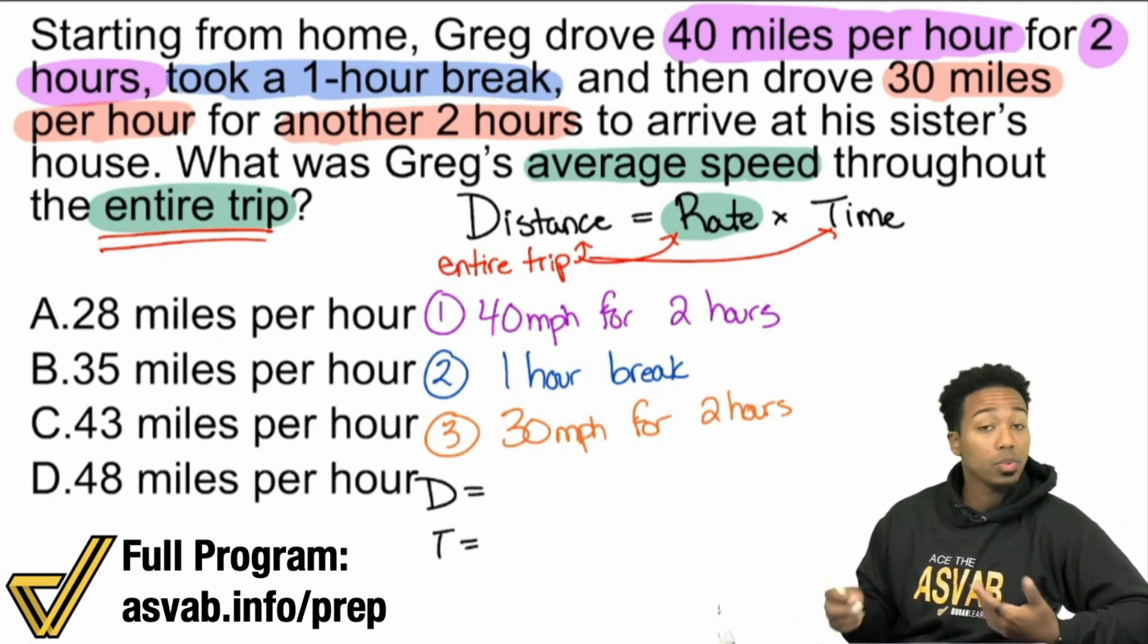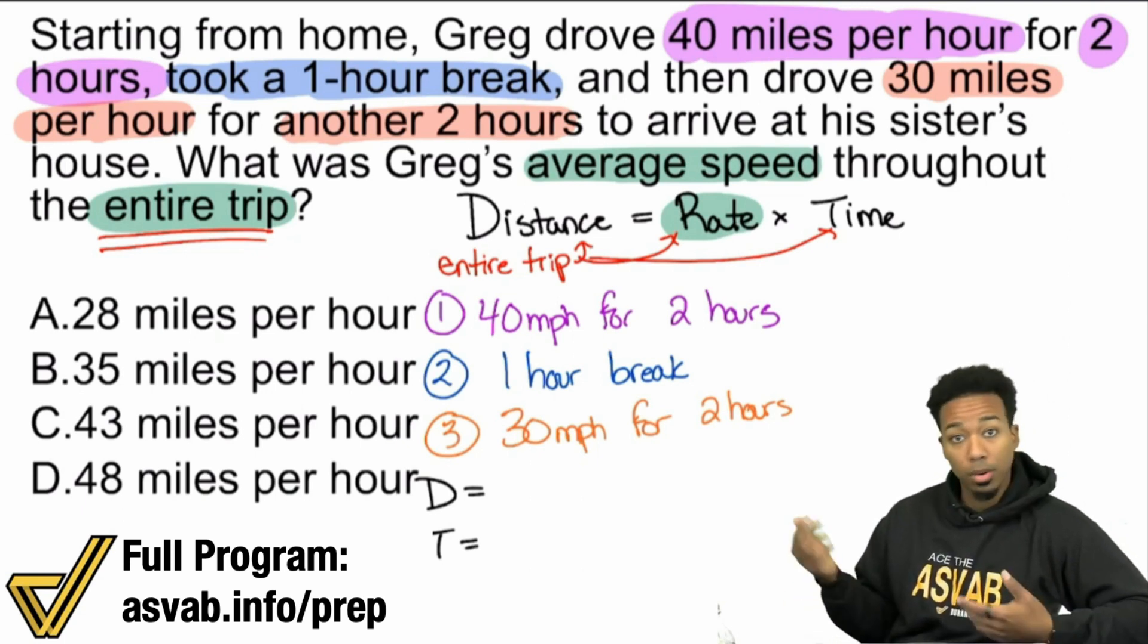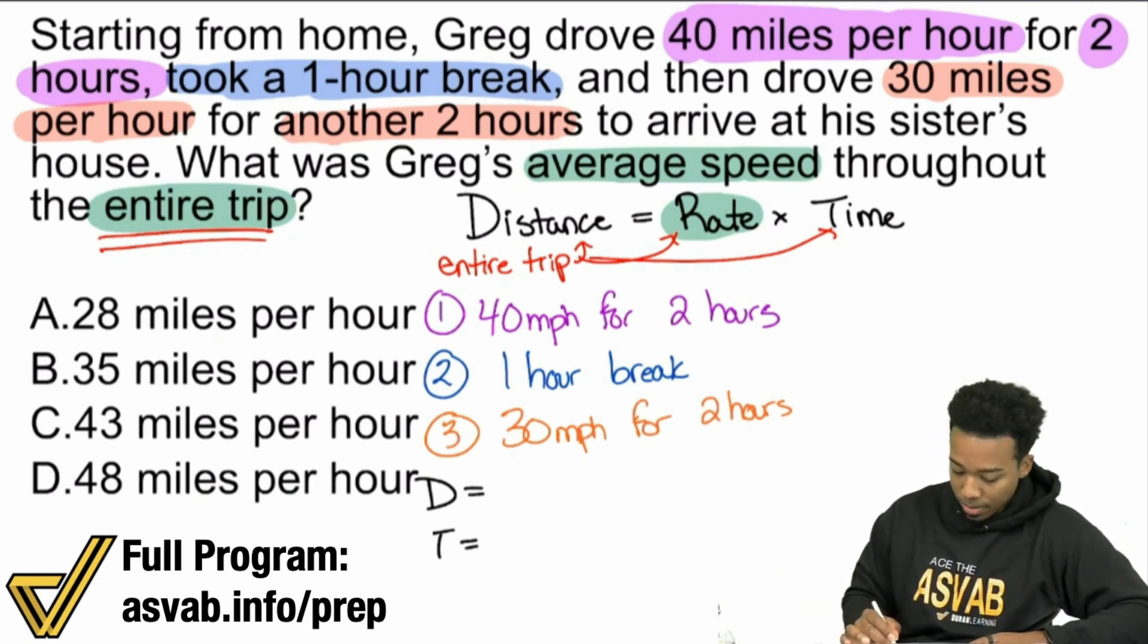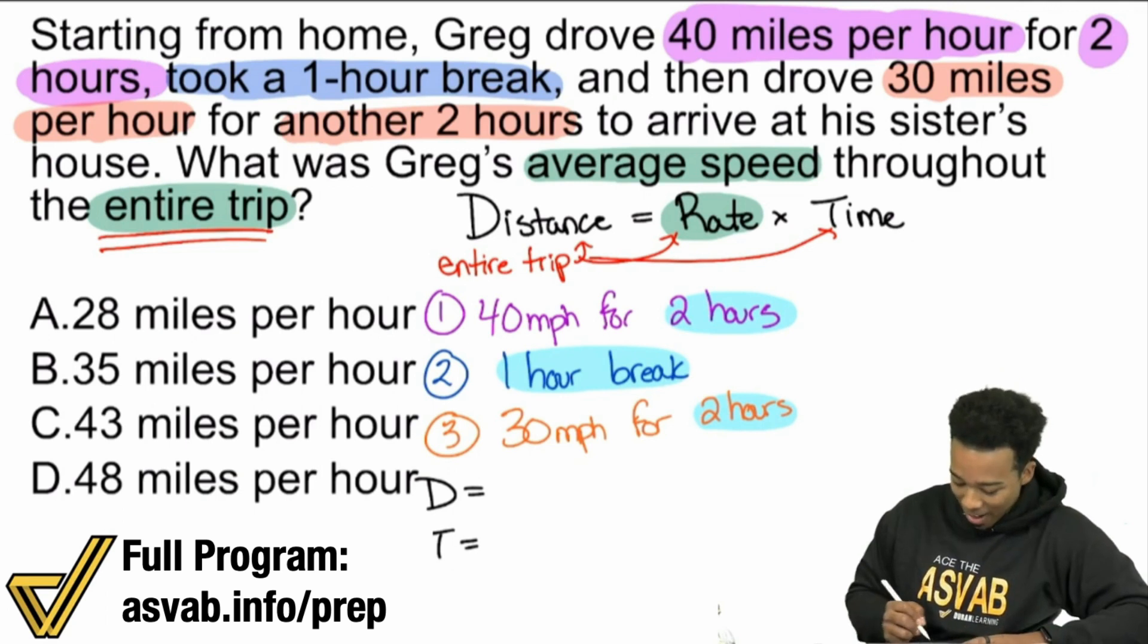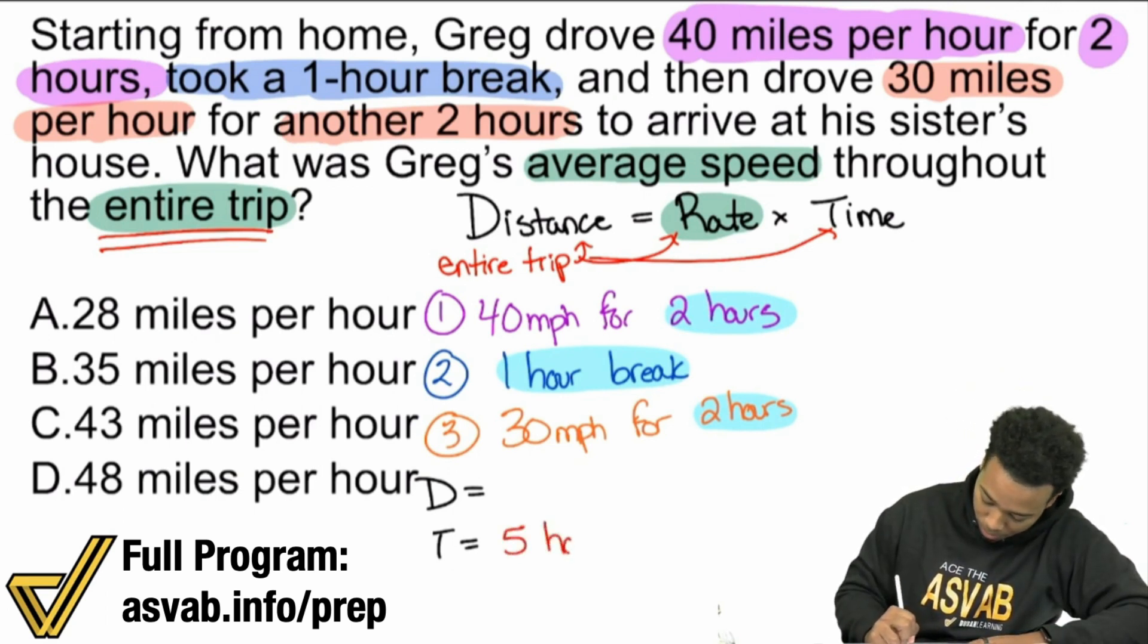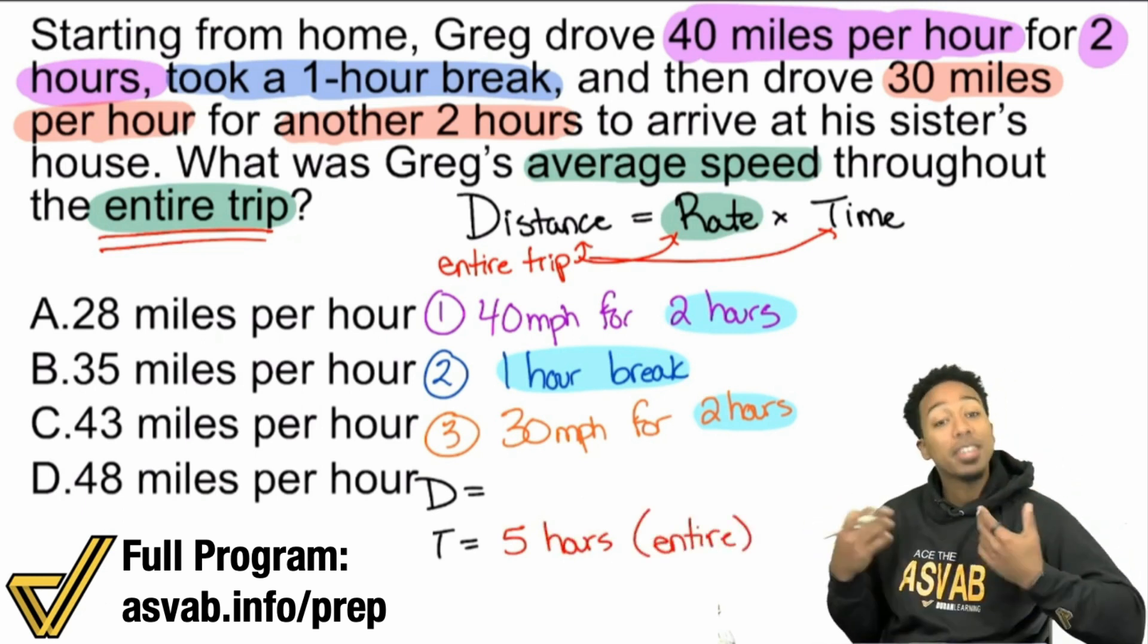Time is going to be the easiest one because with time, all you're going to do is literally add up the entire time that Greg was traveling. We see here that 40 MPH for two hours, a one hour break, and then two hours at the end. Two plus one plus two equals five. So we have five total hours here. The entire trip, entire means everything, everything, including a one hour break.